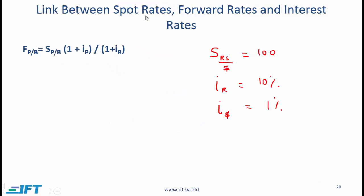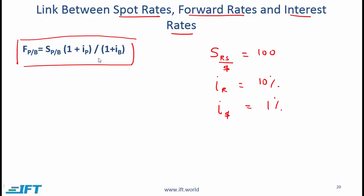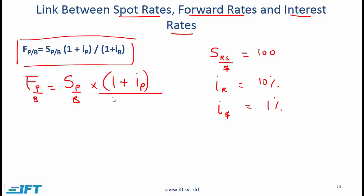We will now talk about the link between spot rates, forward rates, and interest rates. That link is given by a formula which is extremely important and one you must memorize. The forward rate — expressed as price currency over base currency — equals the spot rate, also expressed as price over base, multiplied by (1 plus the interest rate in the price currency) divided by (1 plus the interest rate in the base currency). Notice the base currency interest rate is in the denominator.